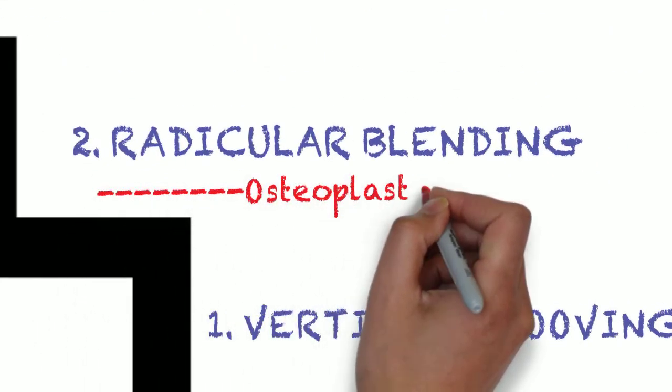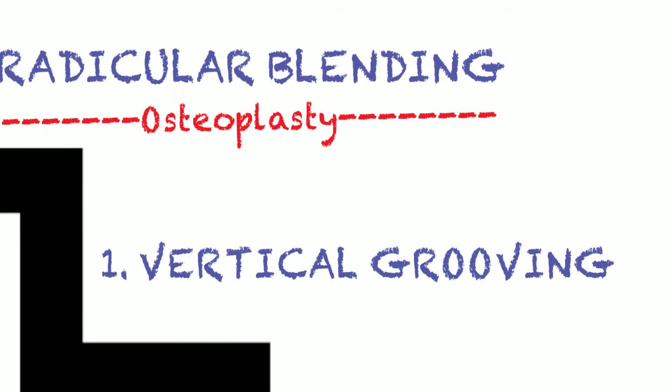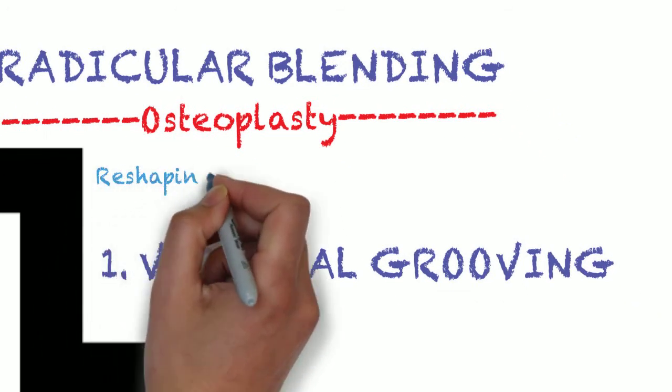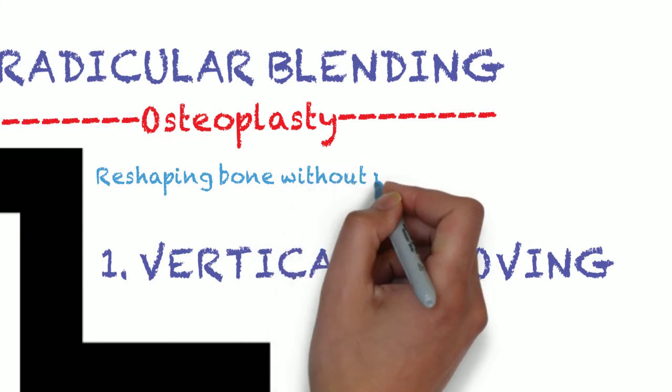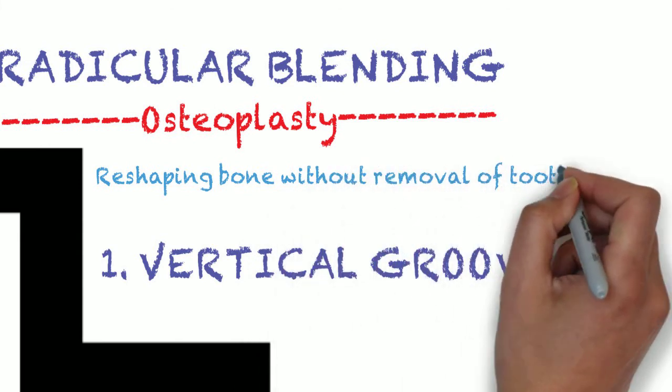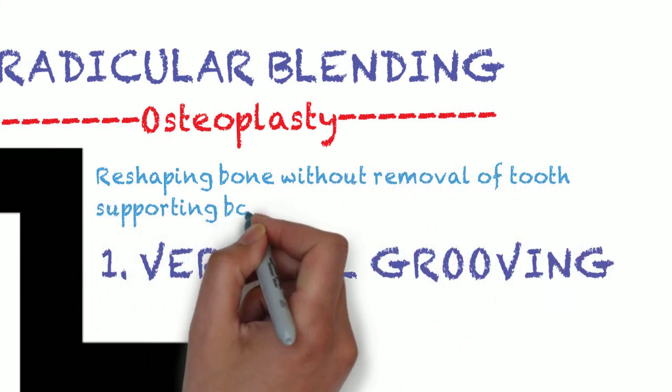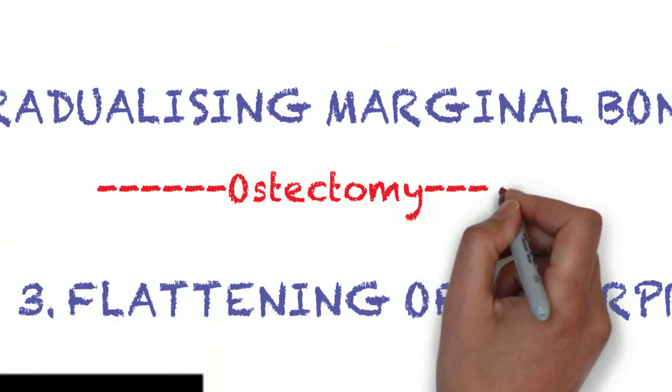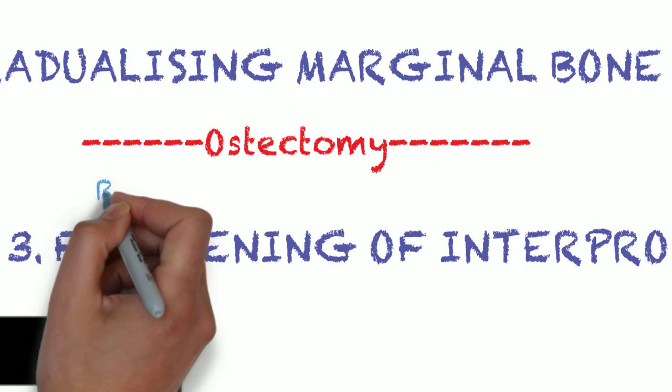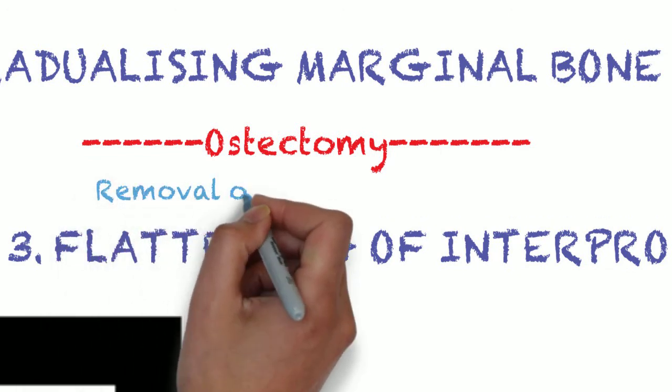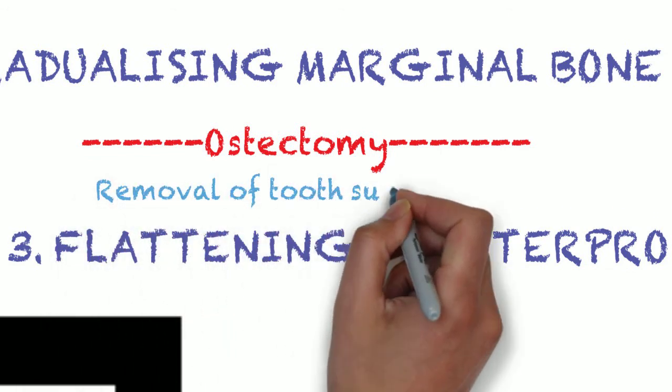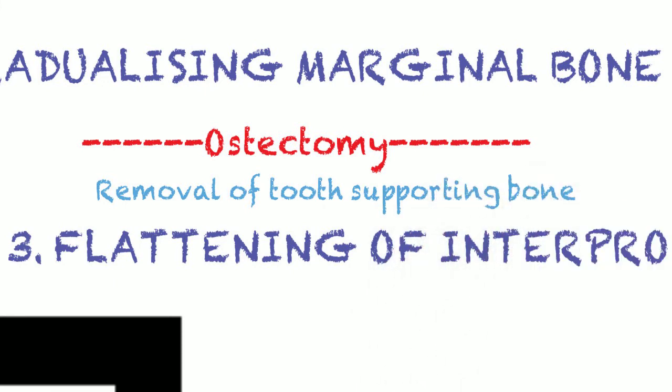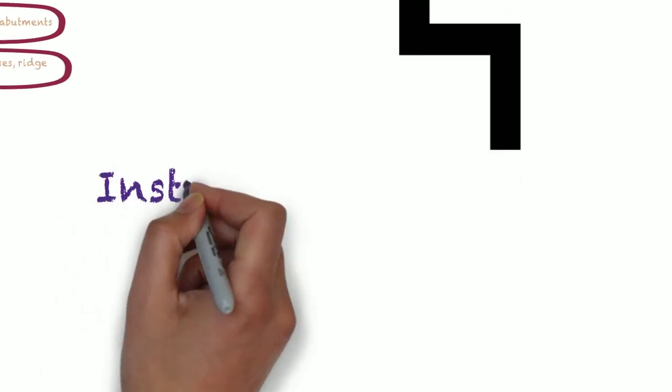The first two steps, vertical grooving and radicular blending, are osteoplasty procedures that involve reshaping of the bone without removal of tooth-supporting bone. The next two steps, flattening of interproximal bone and gradualizing marginal bone, are ostectomy procedures that involve removal of tooth-supporting bone. Let's see what are the various instruments used.